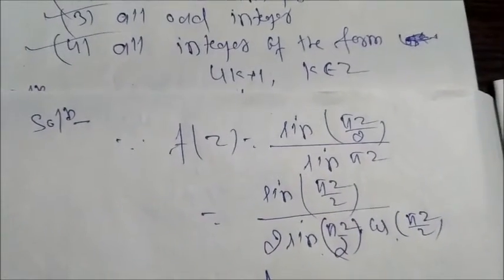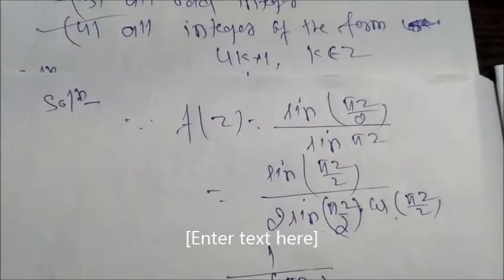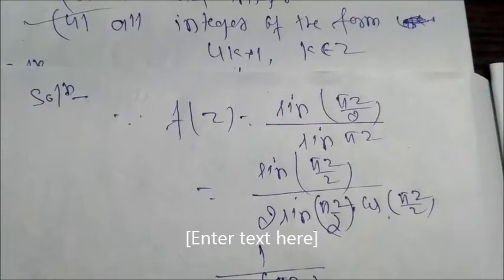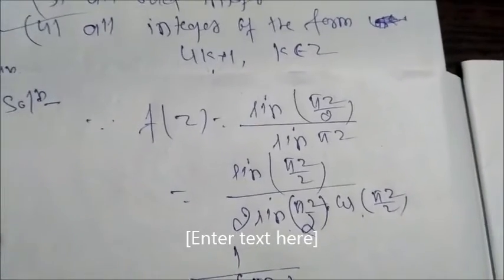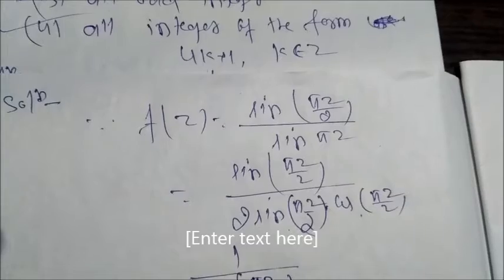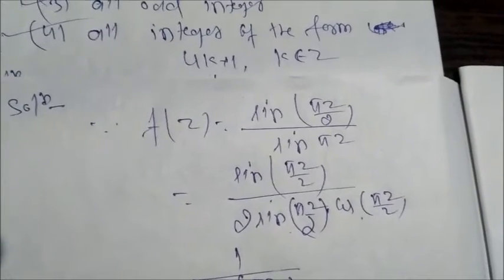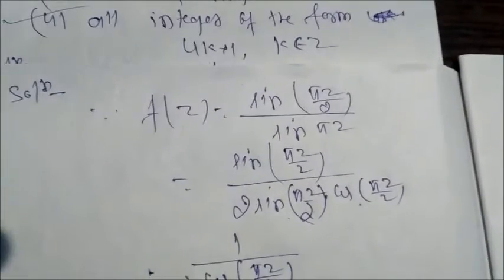Here we will elaborate it into sin(πz/2) upon 2 sin(πz/2) into cos(πz/2). Here sin(πz/2) from numerator and denominator will be cancelled out.